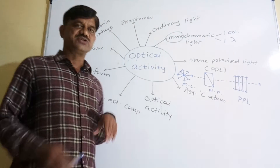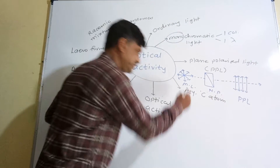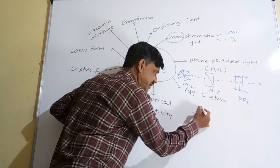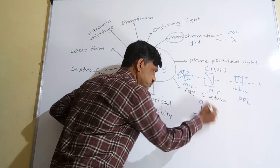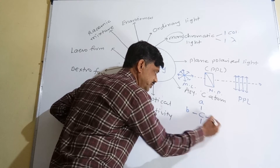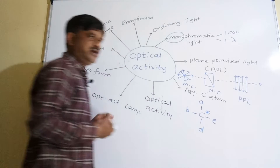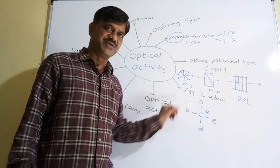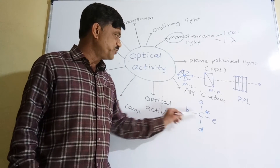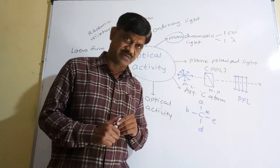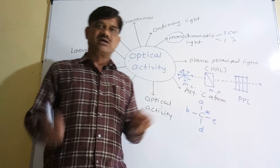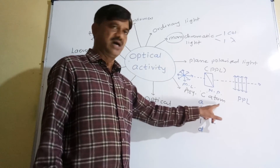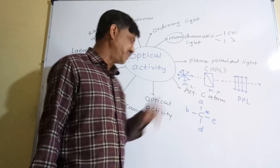The next definition is asymmetric carbon atom. Check this example: carbon has a valency of four. Suppose this centrally located carbon is attached to species A, B, D, and E — four different atoms or groups fulfilling the four valencies of the carbon atom. Such a carbon is called an asymmetric carbon atom. Carbon joined to four different atoms or groups is called an asymmetric carbon atom, and on paper it is denoted by a star mark.